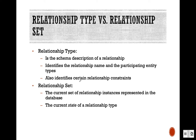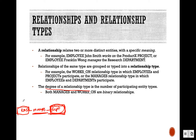The relationship type identifies the relationship name and the participating entity types. It also identifies certain constraints — some rules or restrictions on that relationship. For example, 'employee manages department' — here 'manages' is one type of relationship, and that is the relationship type.